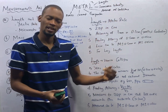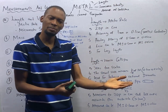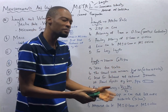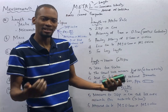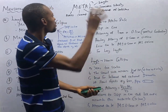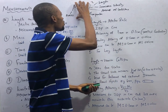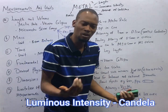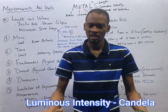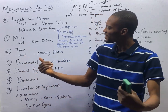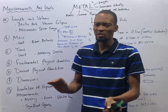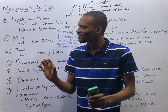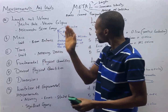Length is in meter. We have centimeter, millimeter, decimeter, and liter. So these are the fundamental quantities — quantities that don't depend on any other quantities — and these are their units.